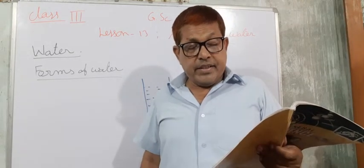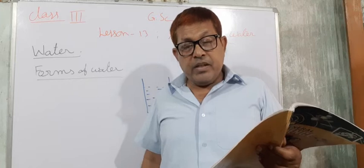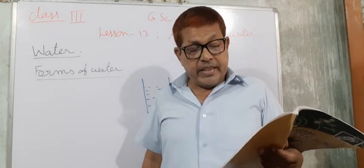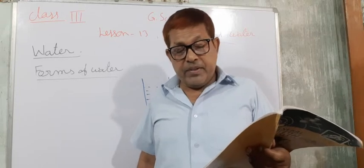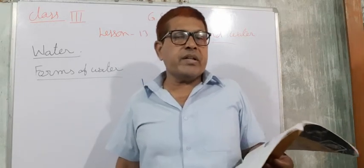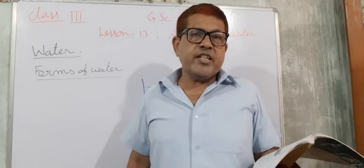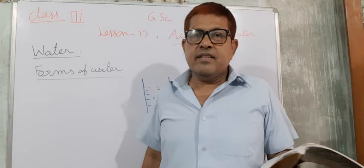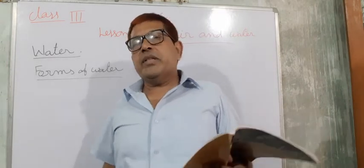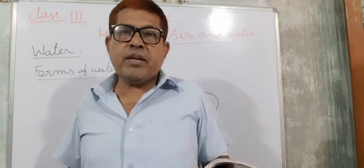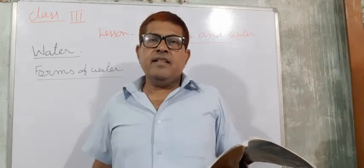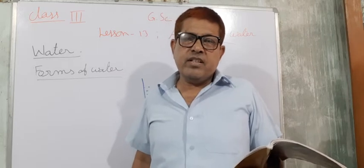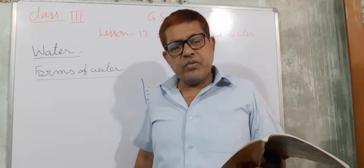Water vapor does not have a definite shape. It takes up the shape of the container the same way as water in the liquid form — it has no shape of its own. When water comes into the form of water vapors, it is the gaseous form of matter, in which it has no shape of its own.